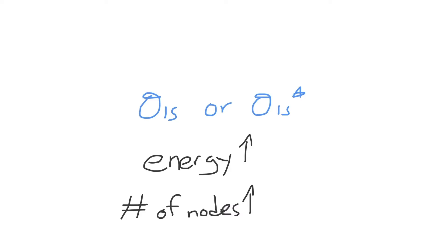We can recall from our molecular orbital diagrams that an antibonding molecular orbital lies higher in energy than a bonding molecular orbital. So we know that the sigma 1s star antibonding molecular orbital has more energy and therefore more nodes than the sigma 1s bonding molecular orbital. So this is our answer for this question.